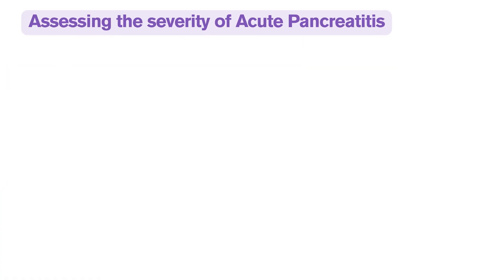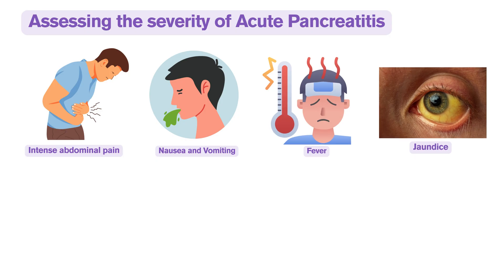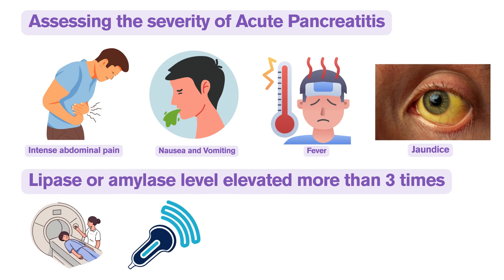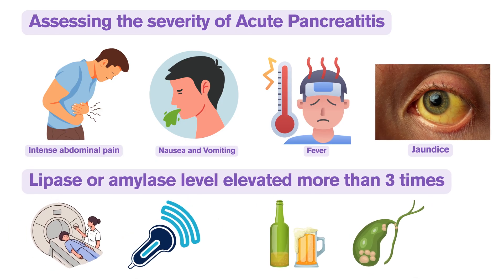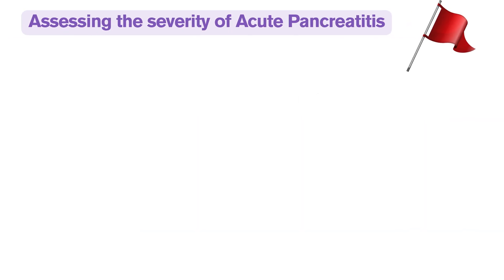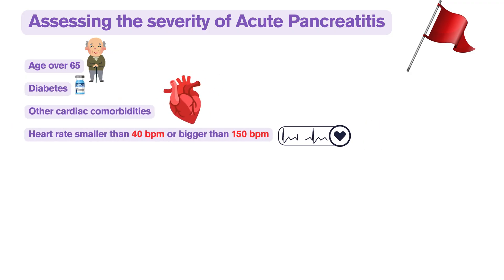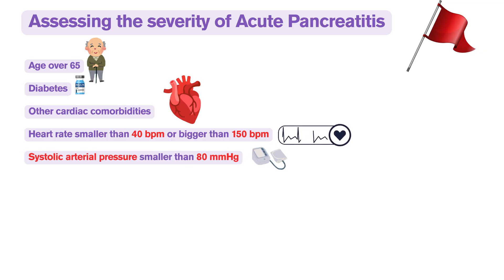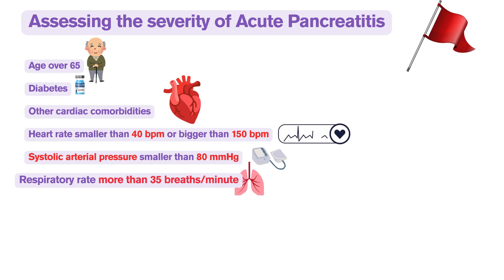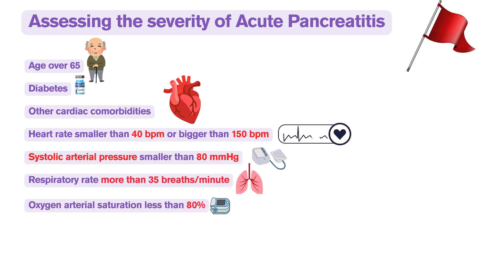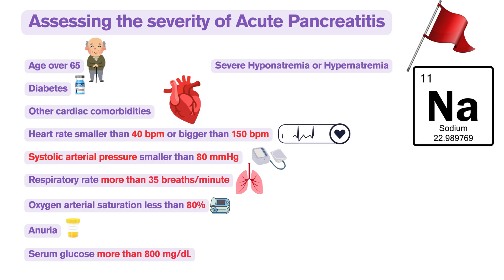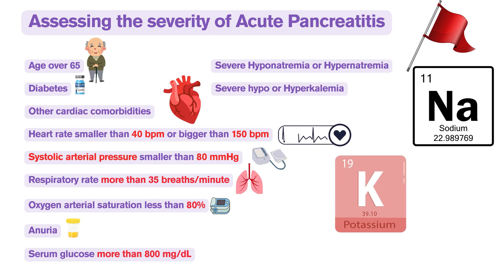To determine the severity of acute pancreatitis and establish which patients should benefit from intensive monitoring in the ICU, multiple clinical and paraclinical markers should be considered, including signs and symptoms, lab findings, imaging results, and the causative factor. Major red flags include: age over 65; diabetes or other cardiac comorbidities; heart rate less than 40 or greater than 150 beats per minute; systolic arterial pressure less than 80 mmHg; respiratory rate more than 35 breaths per minute; arterial oxygen saturation less than 80 percent; anuria; serum glucose more than 800 mg/dL; severe hypo- or hypernatremia; and severe hypo- or hyperkalemia.